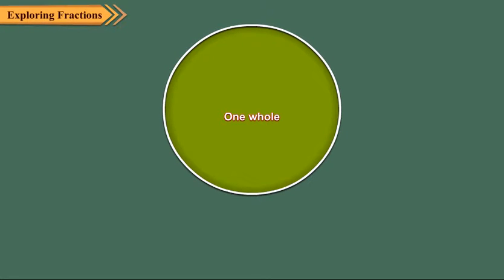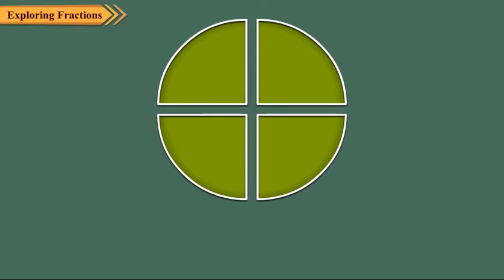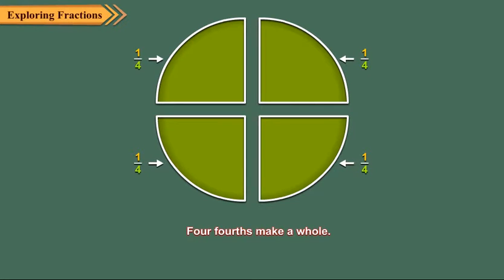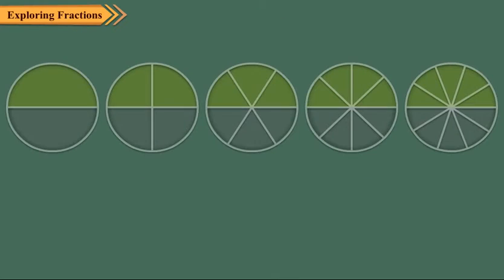Now, again draw a circle and divide it into four equal parts. Each part is one-fourth, that is, one upon four. We see here that four-fourths make one whole.